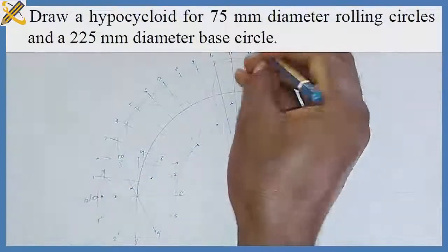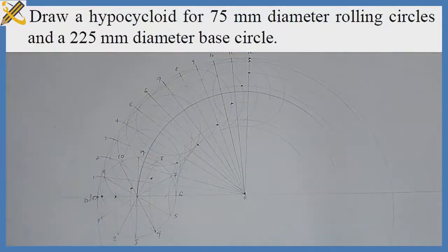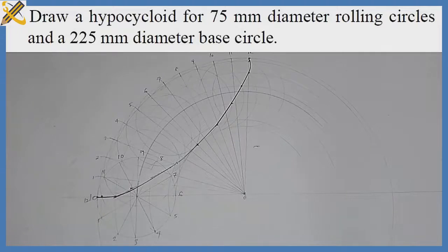Now I have all the trace points. The very last step is to pick up my French curve or flexible curve and draw out the curve through all the points. That is the hypocycloid curve. Kindly ensure you subscribe to this YouTube channel and also share it with friends who might be in need of it. Thank you.